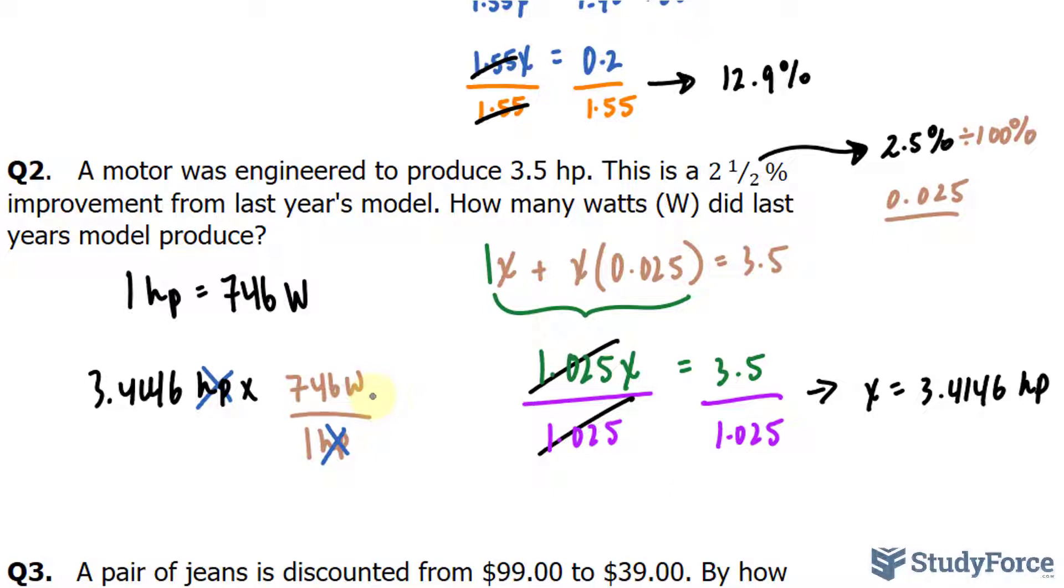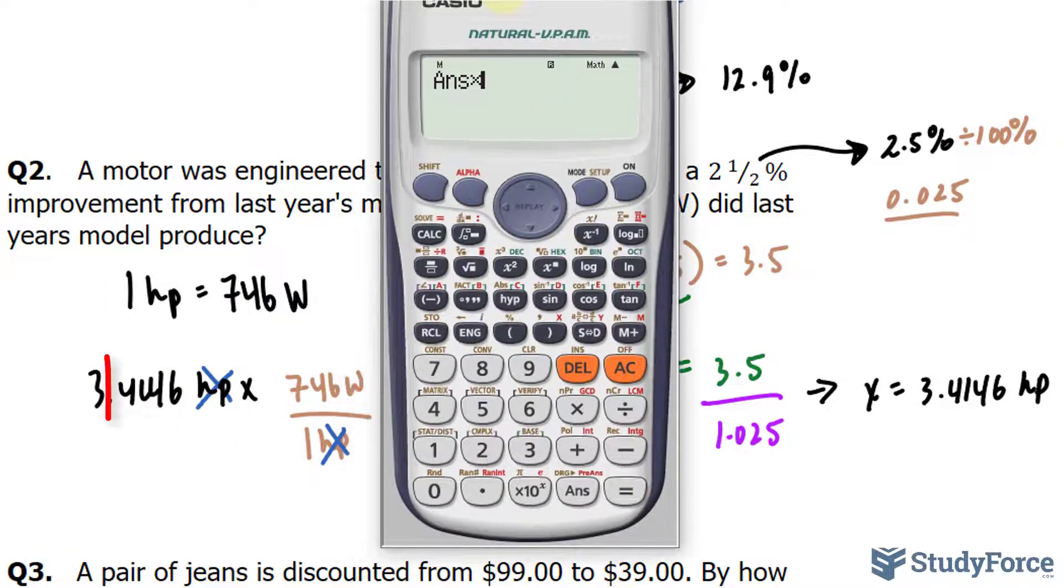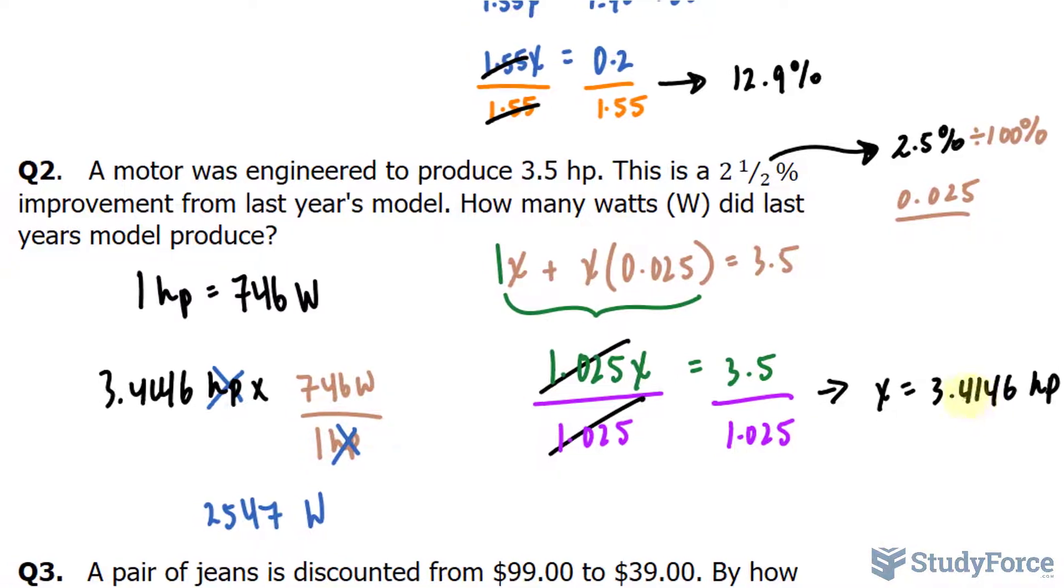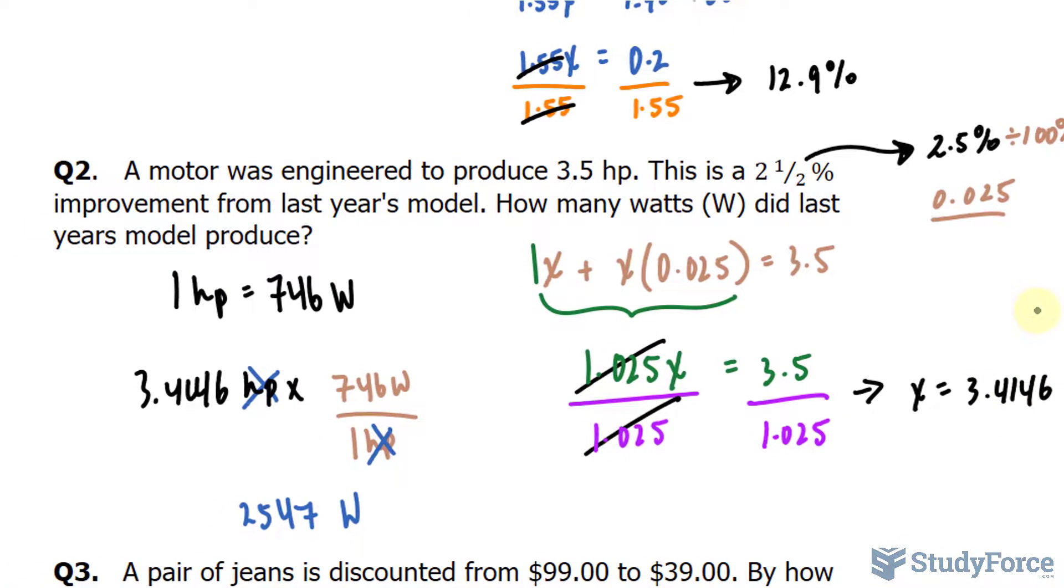Now, you're probably wondering why I kept four digits after the decimal place. Well, normally, I keep more than one digit after the decimal place if it's a multi-step question so that I don't run into rounding errors. Anyway, after multiplying these two numbers, we end up with 2,547 watts. So try to keep as many decimal places as possible and round at the very end.